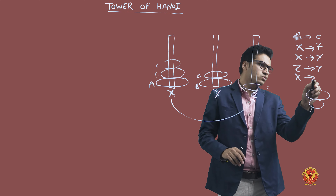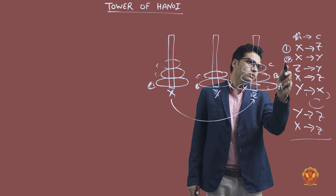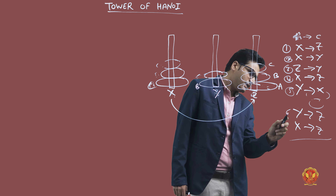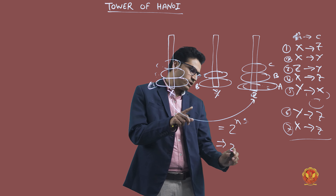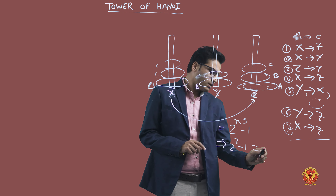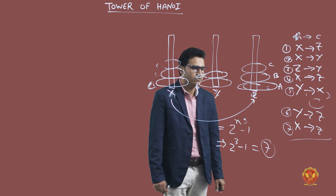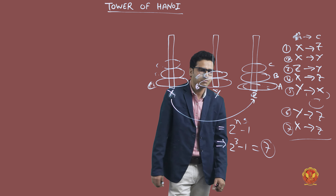The total number of movements is: one, two, three, four, five, six, seven — total seven movements. Here is a formula: 2 to the power n minus 1. If we check with n equal to 3 plates: 2 to the power 3 minus 1 equals 7. So total number of movements is 7. Note: n here is the number of plates, not roads.